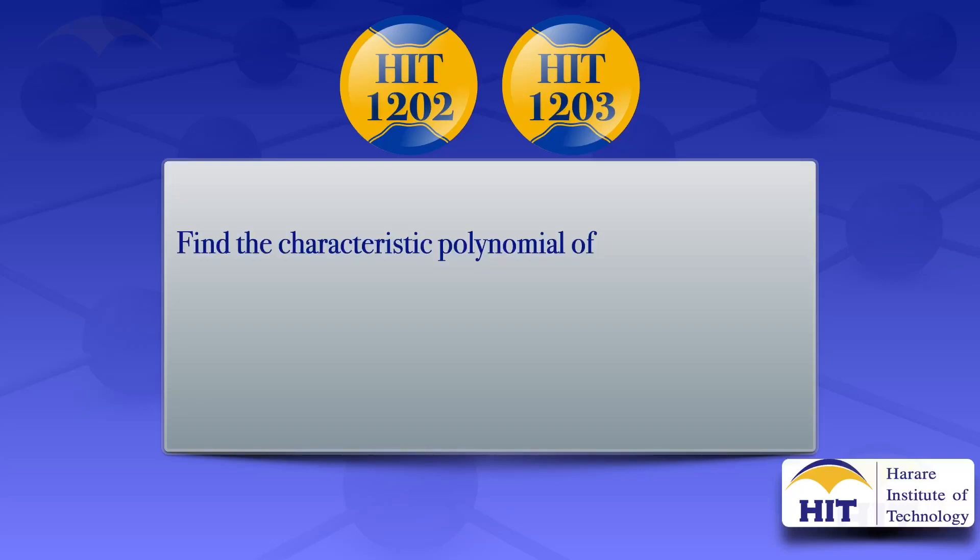In this tutorial, I'm going to find the characteristic polynomial of the matrix A, which is equal to 1, 2, minus 1, 1, 0, 1, 4, minus 4, 5.